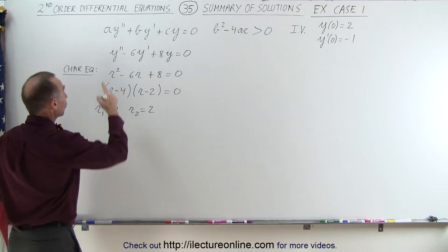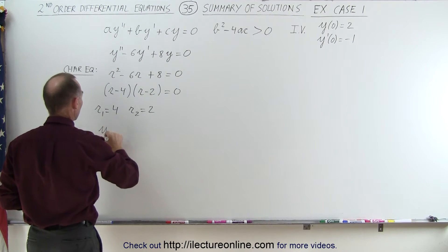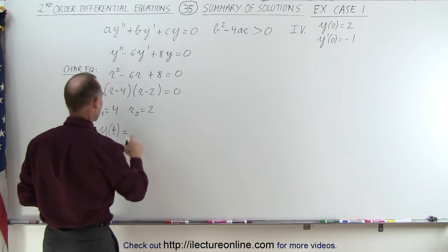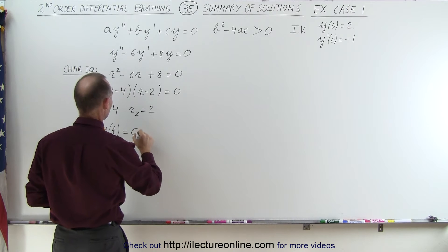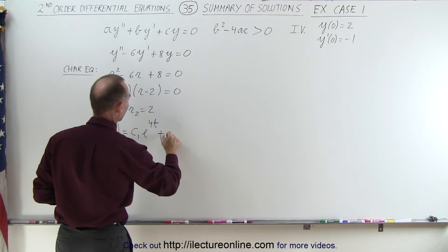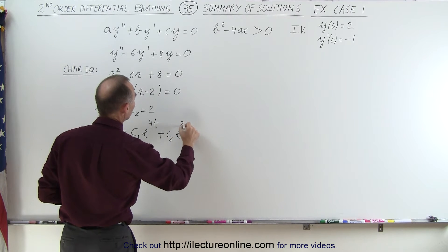Which means the general equation, the general solution to that differential equation, y as a function of time, is equal to some constant c1 times e to the 4t plus c2 times e to the 2t.